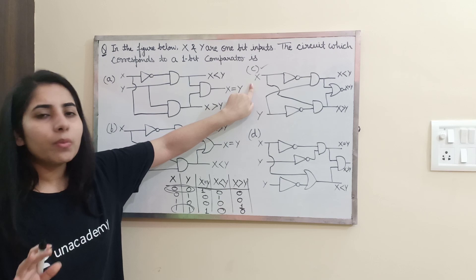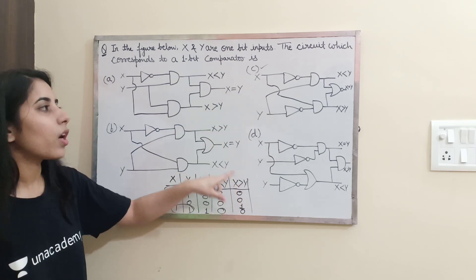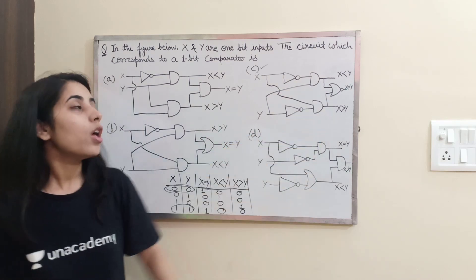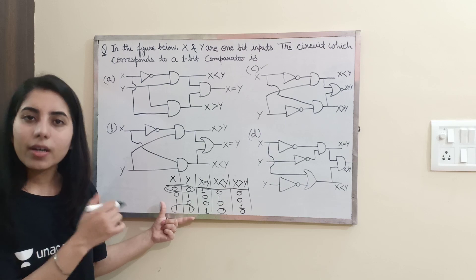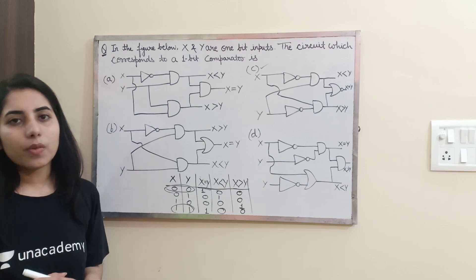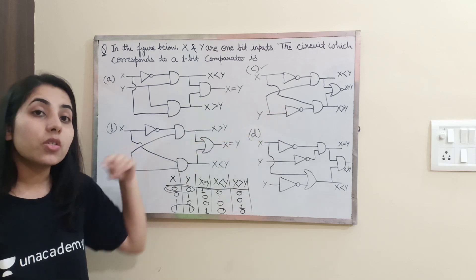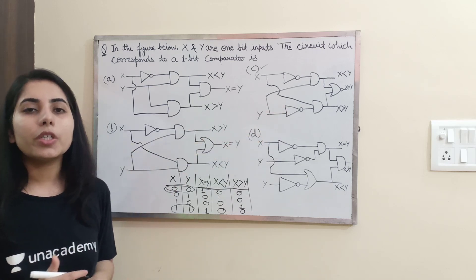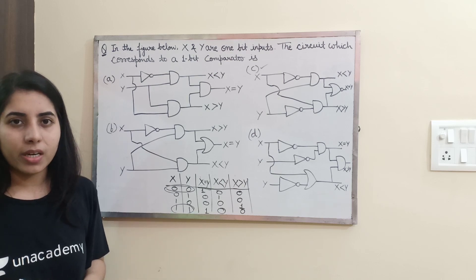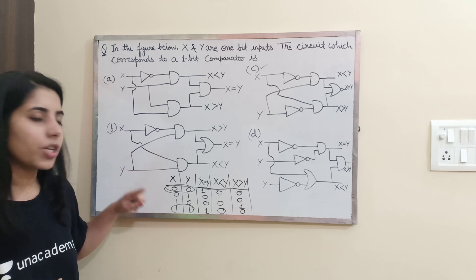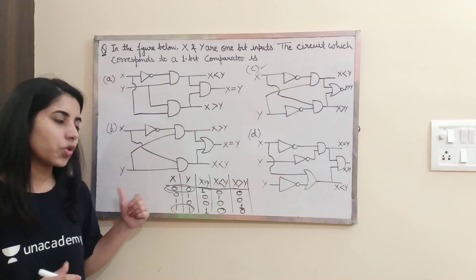Now if you will check this truth table at option C, you are most probably going to get these outputs at different possible outputs given to you here. So you can check this circuit. This should give you exactly same outputs as we are having here. And if this is going to give you the same outputs, that means it is the right circuit. But if it is not giving you the same outputs, then you will check for other options. Any one of the options can be correct. So basically we need to check which of the given circuits are going to satisfy this truth table.